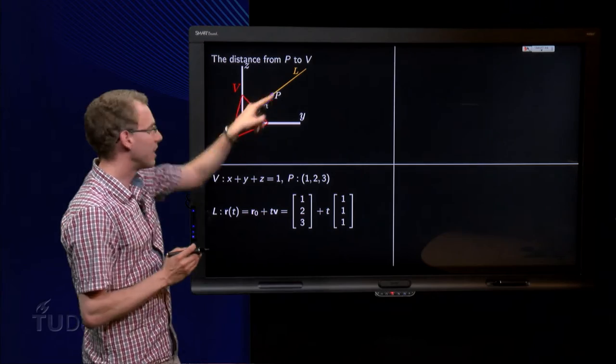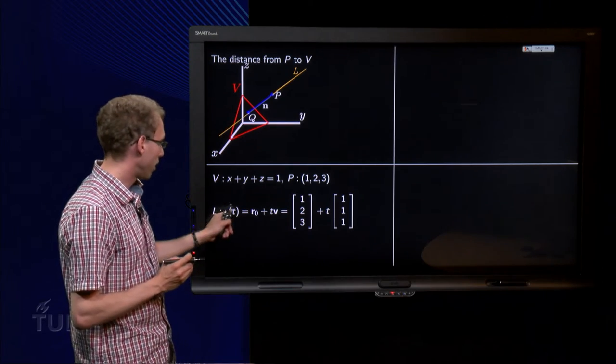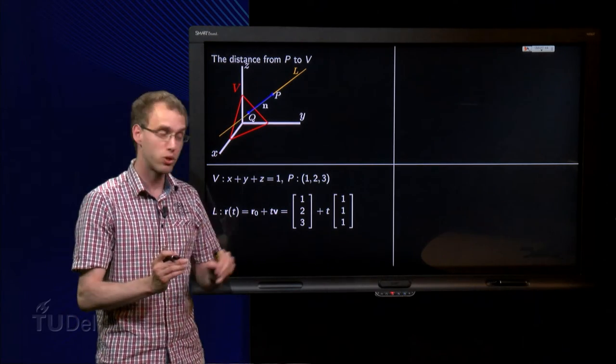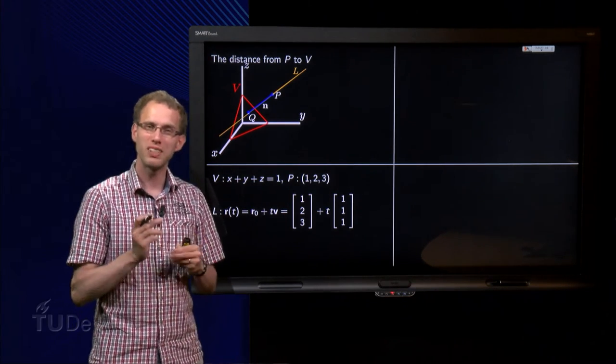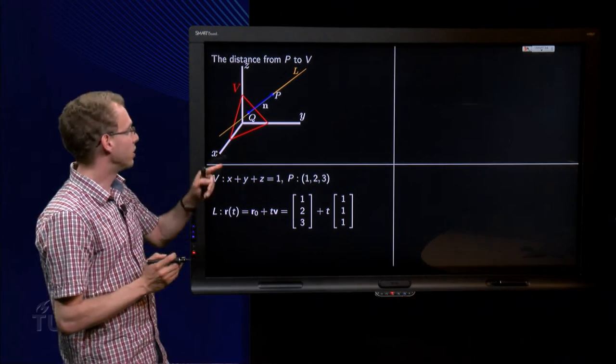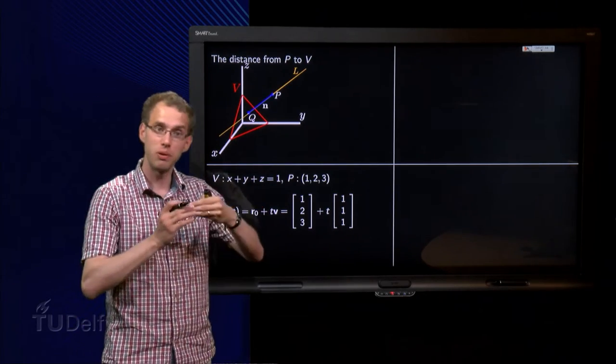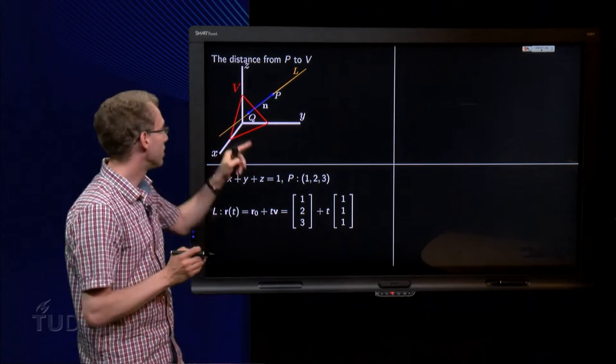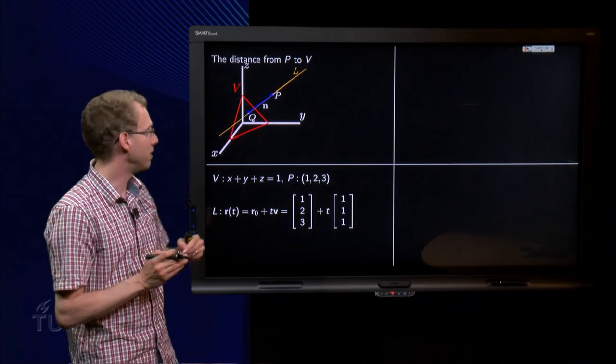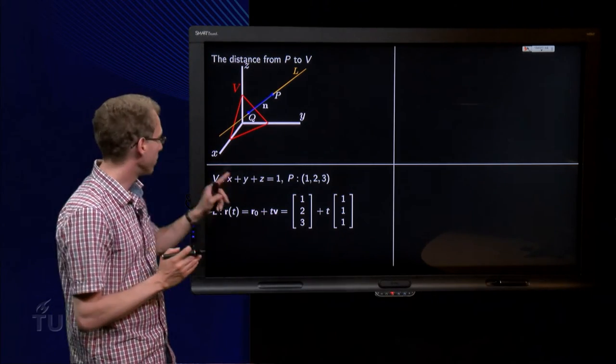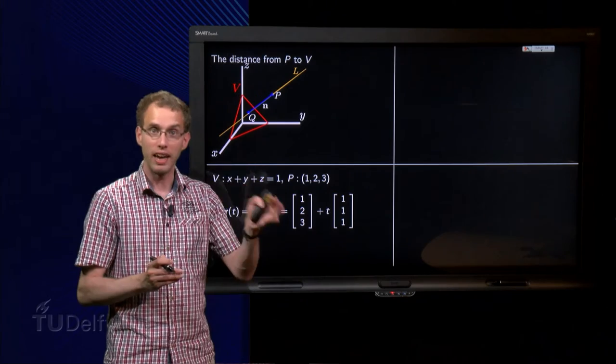Now how can we find the line L? Well, L goes through P, so L is R equals R0 plus T times V, that's always true. We know it has to go through (1, 2, 3), because it has to go through P. But what about the direction vector? Well, there comes the geometry to help. This line L is orthogonal to the plane V, that's how you get fastest to V. That means that this direction of L is exactly along the normal of the plane V, and we can find the normal. The normal consists of the components before the X, the Y and the Z, because those were the A and the B and the C from the normal.